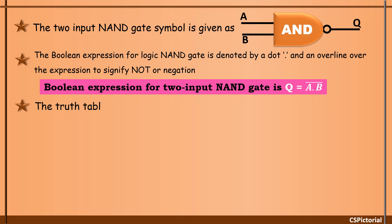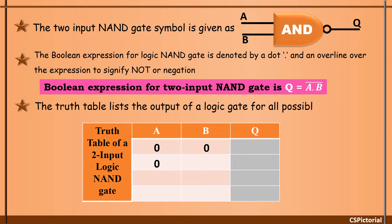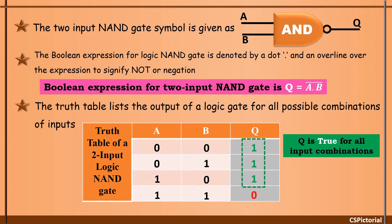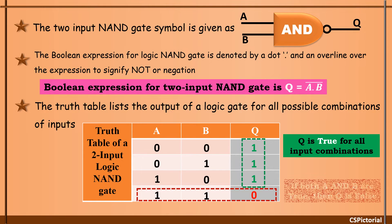The truth table lists all possible input combinations and the output produced by the gate. This is the truth table of a 2 input NAND gate. The output Q is 1 for all combinations of input except the case when both inputs are 1, the output Q is 0.